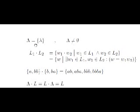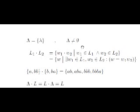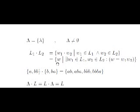Let's define the concatenation of two languages, which will be denoted analogously to the concatenation of two words. The concatenation of language L1 with language L2 yields a new language containing all the words that can be obtained by concatenating any word in L1 with any word in L2. We can denote them as follows.